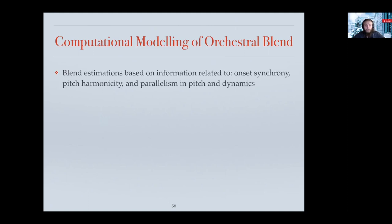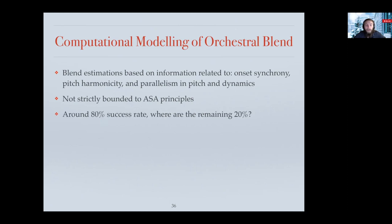We saw that we can detect blend effects from symbolic information with estimation based on onset equality, pitch harmonicity, and parallelism in pitch and dynamics, and that it is not strictly bound to ASA principles. With around 80% success rate, we may ask where the remaining 20% is. It may be information related to timbre — and I cannot do a presentation about perceptual effects of orchestration without mentioning timbre. Some estimation based on processing audio sources could improve the models. There is also musical context, which is more difficult to evaluate, and of course information related to individual perception.